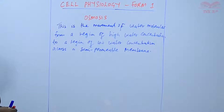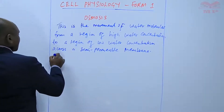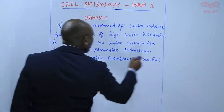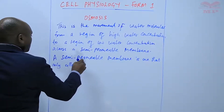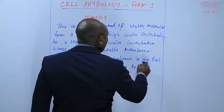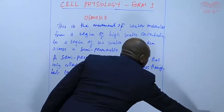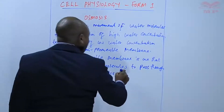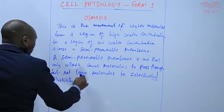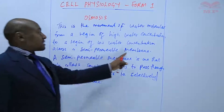A semi-permeable membrane only allows small molecules to pass through but not large molecules. It is also called selectively or partially permeable — these terms mean the same thing as semi-permeable membrane.